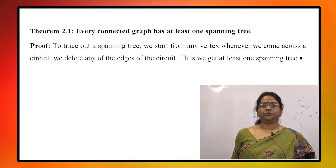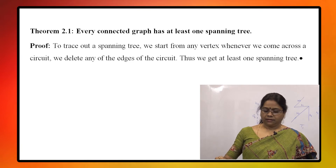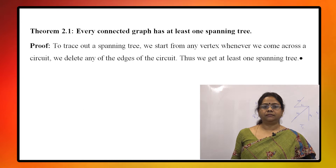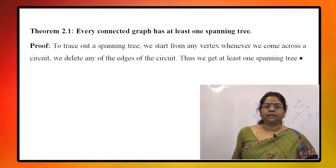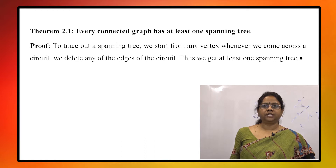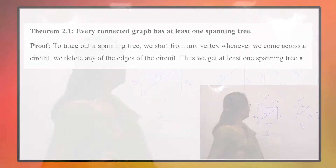Now we come to a simple theorem which states that every connected graph has at least one spanning tree. We can see that if we try to trace out a spanning tree, we start from any vertex. Whenever we come across a circuit, we delete any of the edges of the circuit. Thus, we get at least one spanning tree.